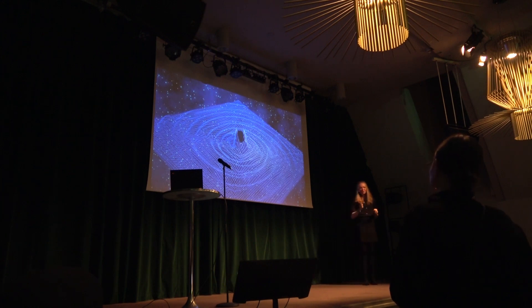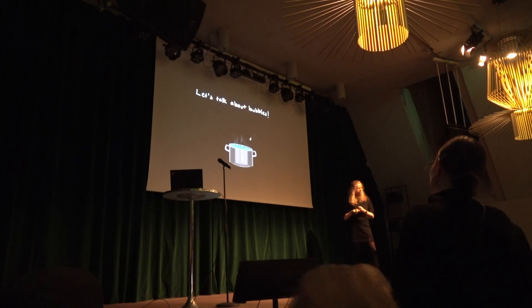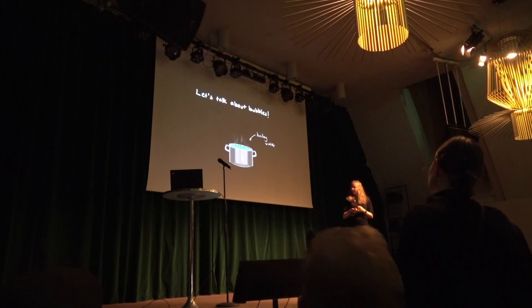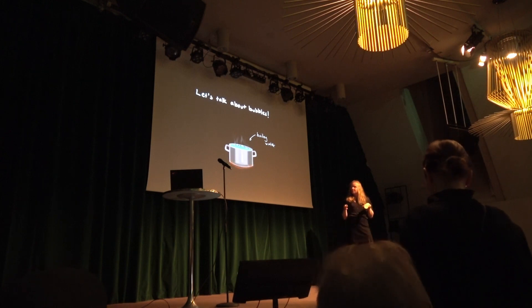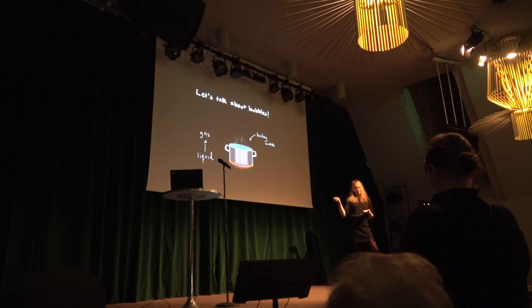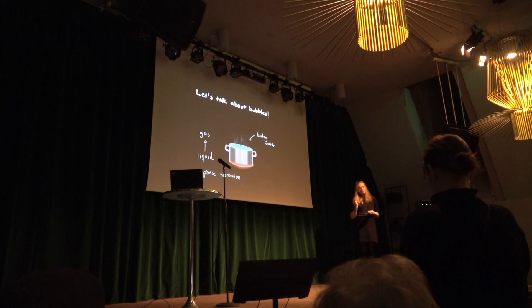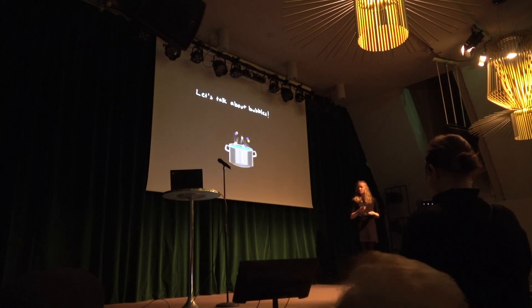So how do early universe gravitational waves actually form? Imagine that you have a pot of boiling water. As you start to heat up your pot of water, it starts to bubble — water going from liquid phase to gas via the bubbles. This is something called a phase transition. Something very similar can actually happen in the early universe.